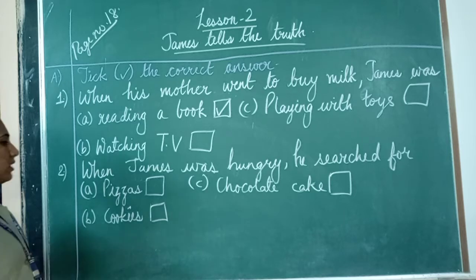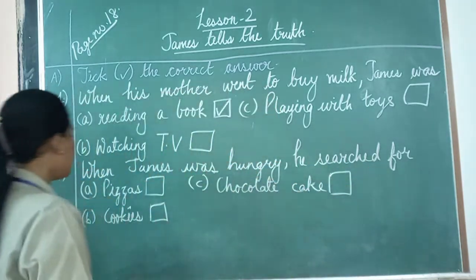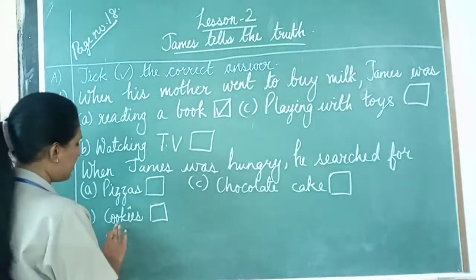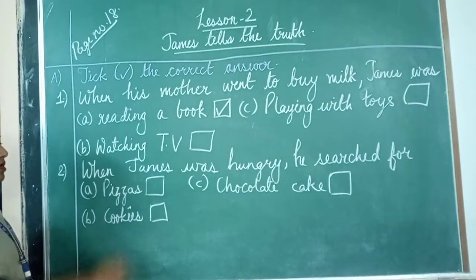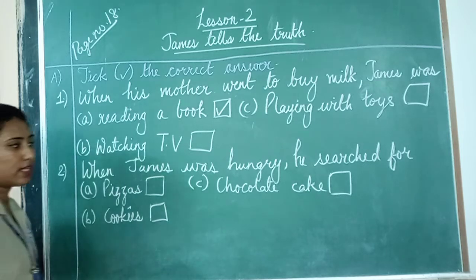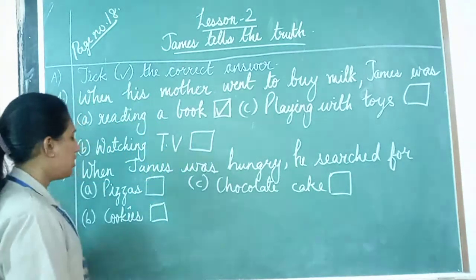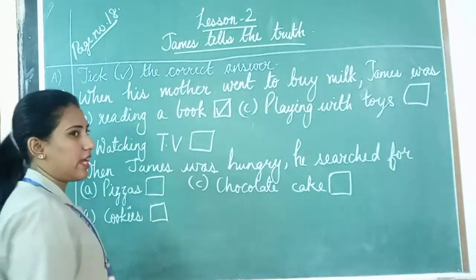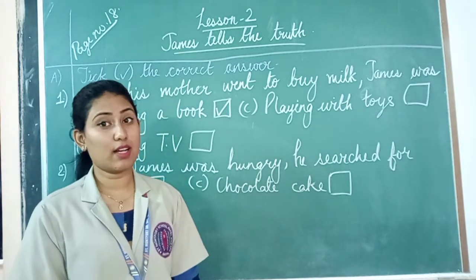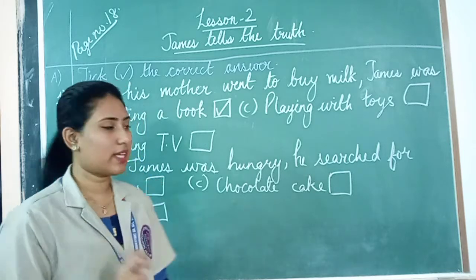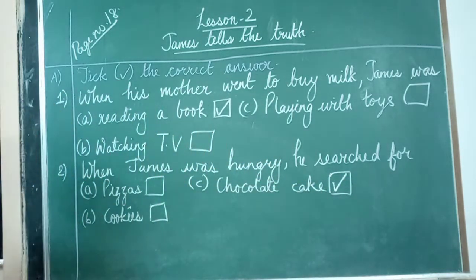Now the next one. When James was hungry, he searched for... options are: pizza, cookies, or chocolate cake. When he was hungry, James started searching — what was he searching for? Chocolate cake, which was kept in the jar. So tick on option C, that is chocolate cake.